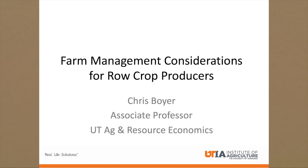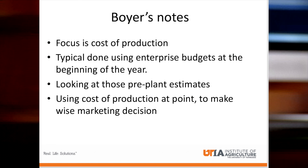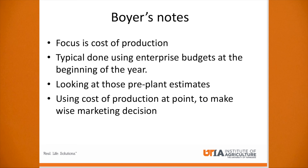That's a very broad title topic. What I want to spend our time talking to you about is using cost of production in making those decisions. The three questions I want to try to address are: how do I use my cost of production mid-production year to make wise decisions for the rest of that year? How do I use that information to find lower cost inputs for next year's production? And how do I use my cost of production in making wise marketing decisions for this year?